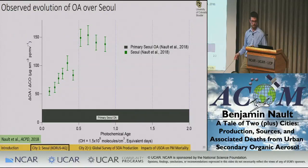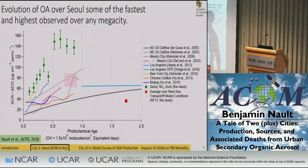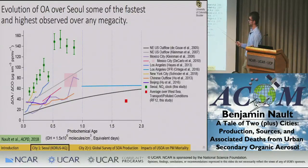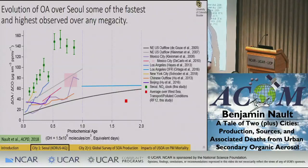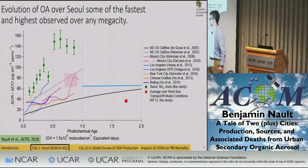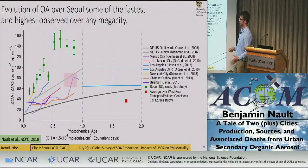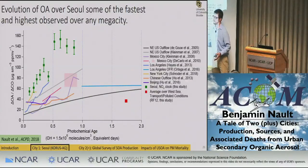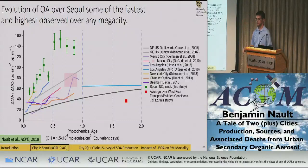Comparing Seoul with other megacities around the world — Mexico City, Los Angeles, China, and Beijing — the SOA production over Seoul is much higher and more rapid than observed in many cities. Even during the transport event over the West Sea with very high measured concentrations, the dilution-corrected OA value was still much lower than what was observed over Seoul. This strongly suggests that secondary organic aerosol production over Seoul during most of the campaign was due to local emissions and chemistry.